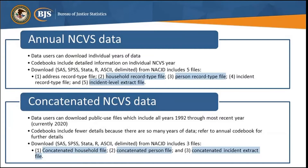Concatenated or cumulative files include years of data from 1992 to the most recent years. Using these files allows for the examination of crime over time, so looking at trends in crime. Concatenated codebooks include less detail because there are so many years of data included in these files.